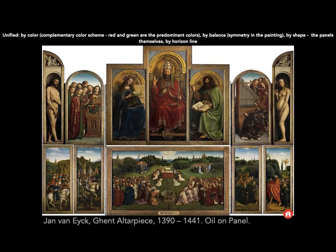This is the Ghent Altarpiece, done by Jan van Eyck, and it is unified in many ways. When you're explaining how an artwork is unified, your goal is to explain how it's unified in three ways. Any time an artwork uses a color scheme, it's unified through harmony, because color schemes create harmony — our eyes find them aesthetically pleasing together.